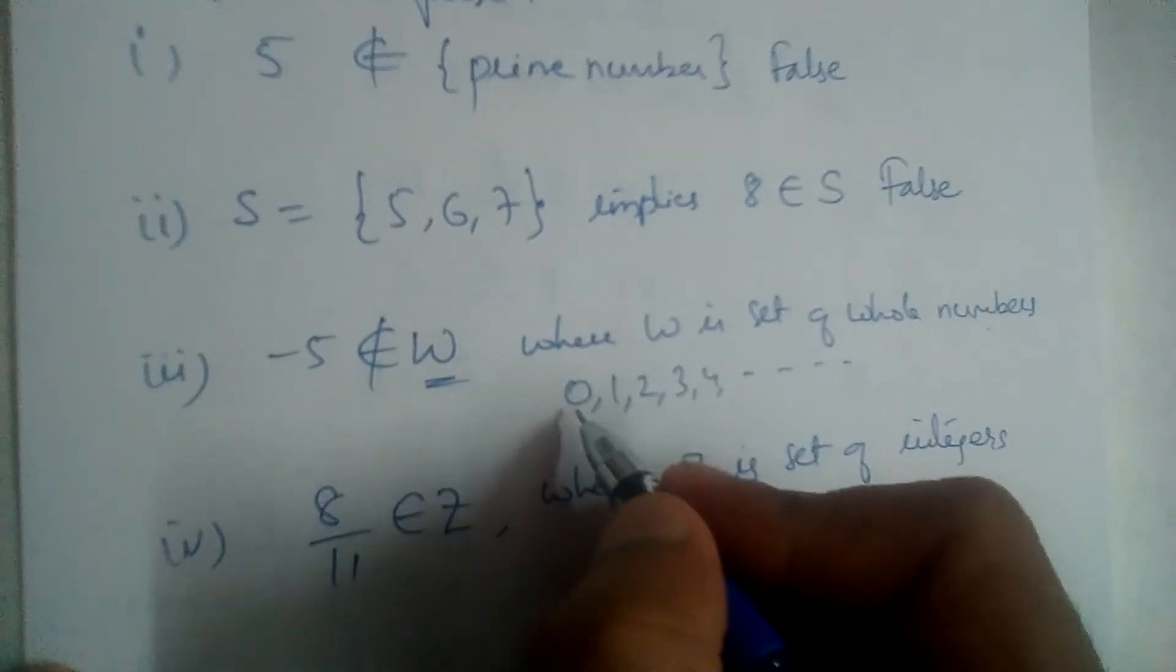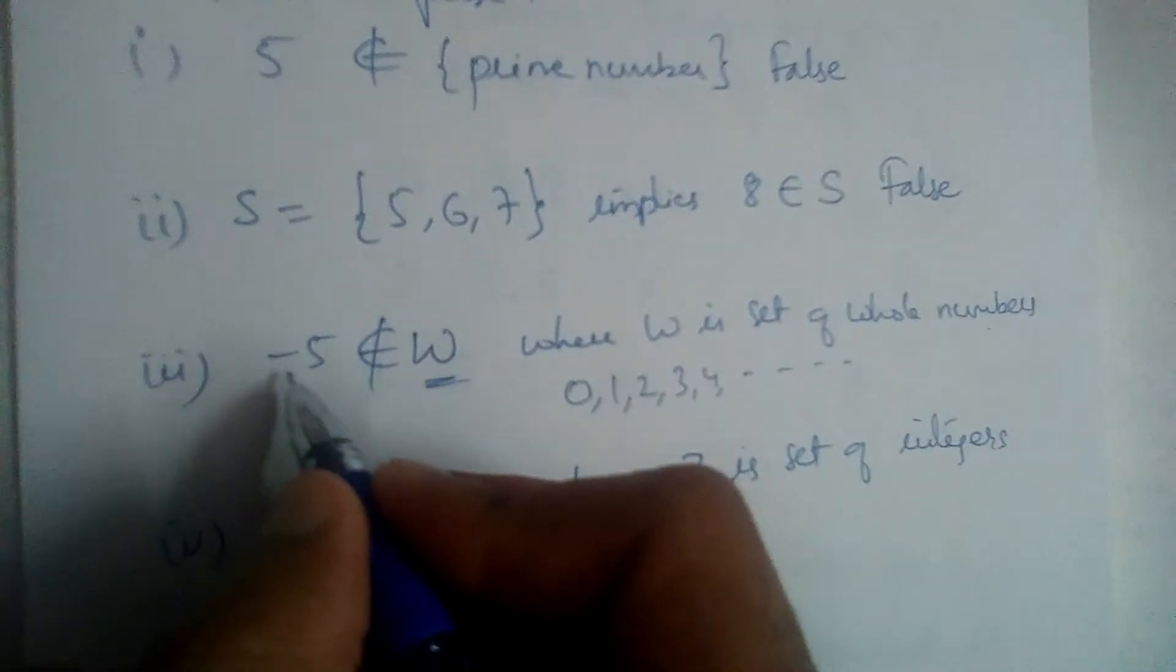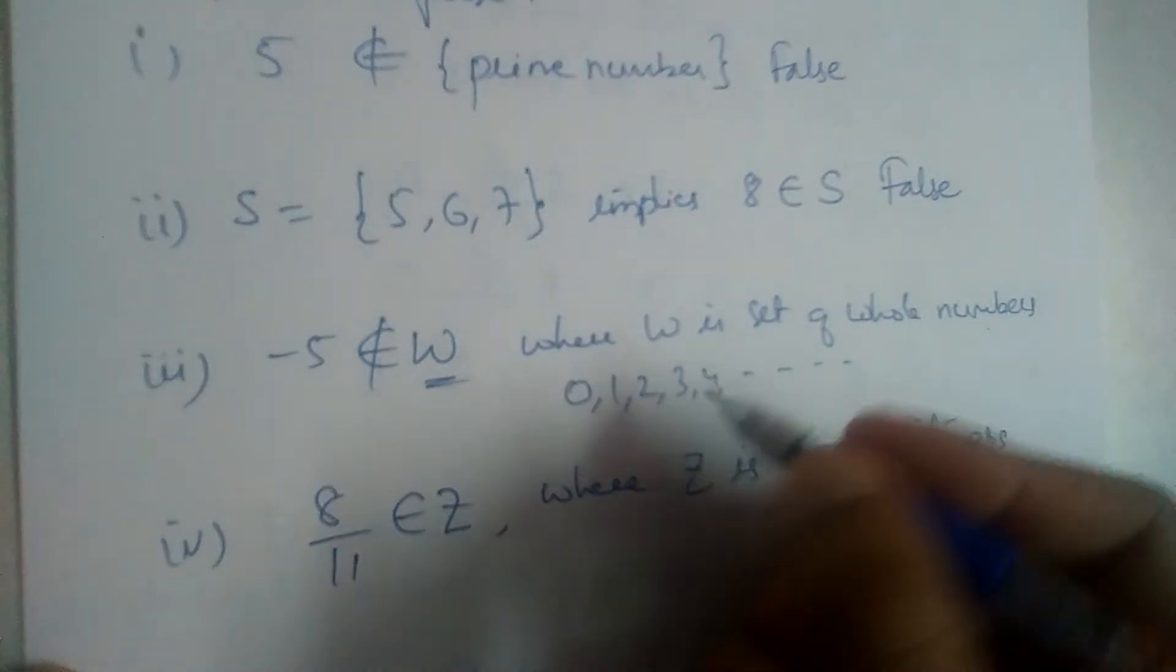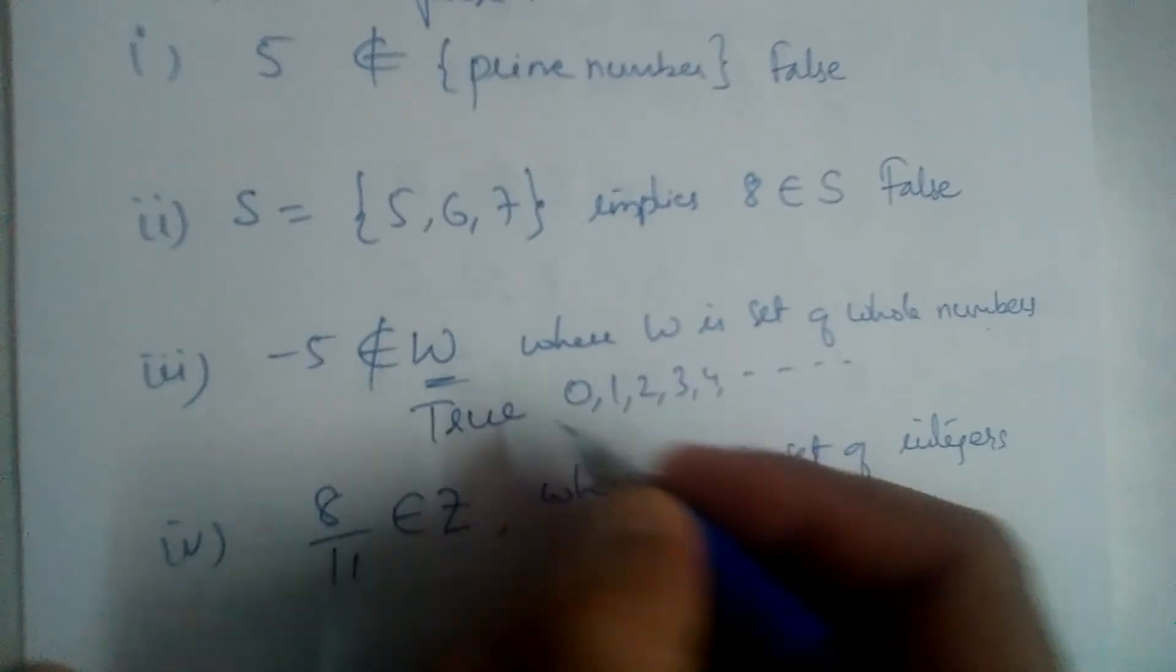Positive numbers and 0, these are whole numbers. So minus 5 clearly does not belong to whole numbers, isn't it? So this is true.